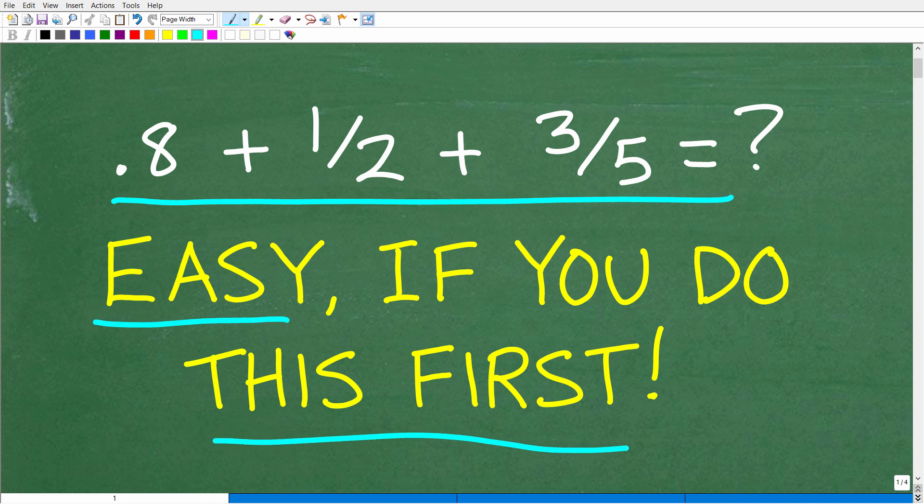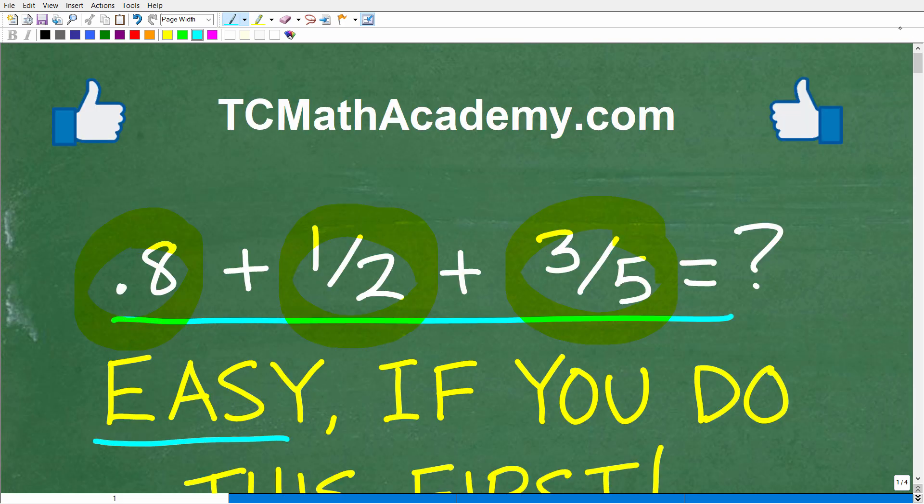Alright, so let's see if you do this one thing, and again, the only rule here is no calculator. We have 0.8 plus 1 half plus 3 fifths, and if you have the answer, that is fantastic. Put that into the comment section. I'll show you the correct answer in just one second, then the course will walk through exactly how to do this problem step by step.